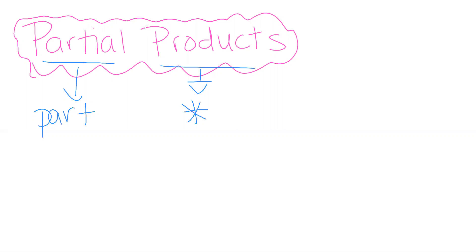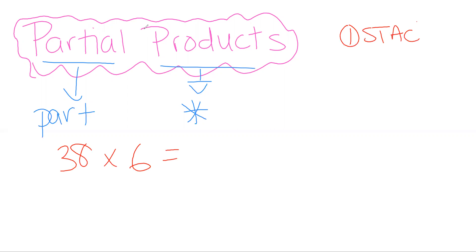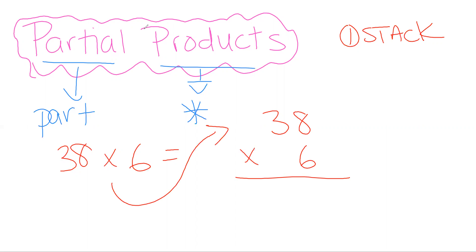Let me model what we're thinking about today. I'm going to start with a two-by-one number — let's say 38 times 6. When we're doing partial products, the first thing we want to do is stack our numbers as an algorithm. So I'm going to take 38 and 6 and set it up like this. Step one: stack it.